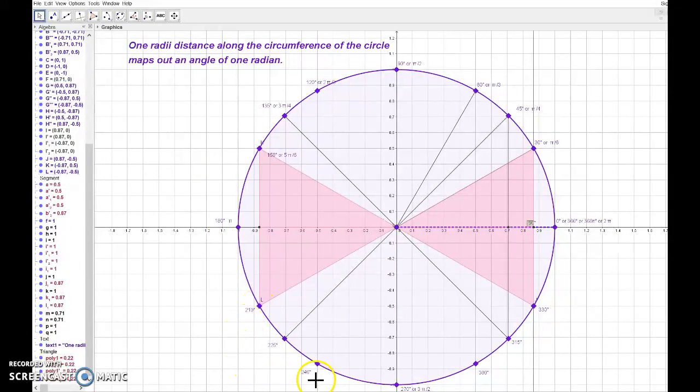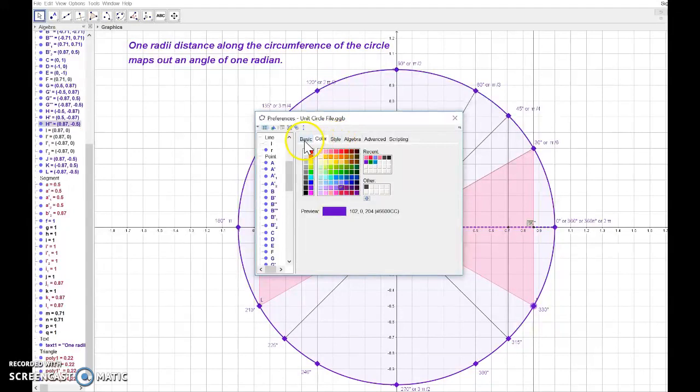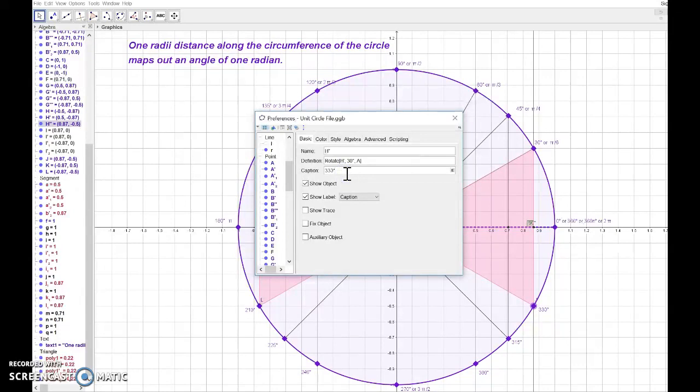7 pi over 6, 8 pi over 6, 9 pi over 6, 10 pi over 6, 11 pi over 6. So stop the video and go ahead and mark, go to the caption in the basic tab and add the radian measure. And I'll meet you back here when your triangle is labeled.